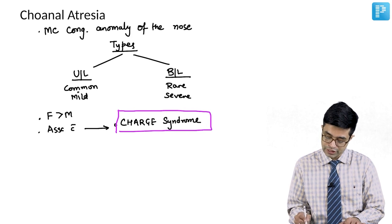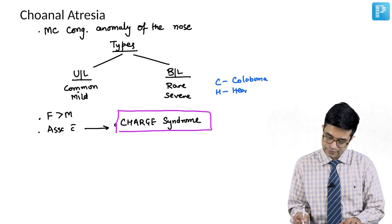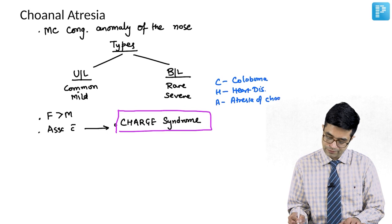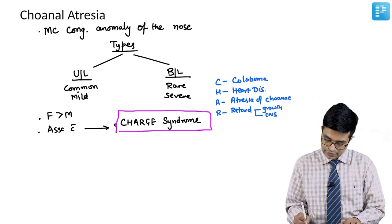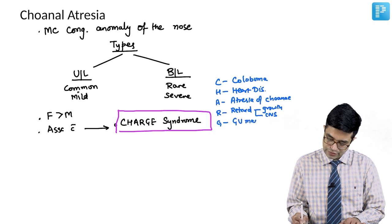The full form of CHARGE is: C stands for Coloboma of the eye, H stands for Heart disease, A stands for Atresia of the choanae (choanal atresia), R stands for Retardation of growth as well as retardation of CNS development, G stands for Genitourinary malformations, and E stands for Ear anomalies.